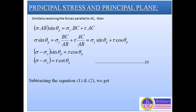Similarly, while resolving all the forces along AC, we get the equation: sigma·AB·sin θP = σy·BC + τ·AC. Simplifying this equation in the same way as before, we get the final equation: sigma − σy = τ·cot θP.